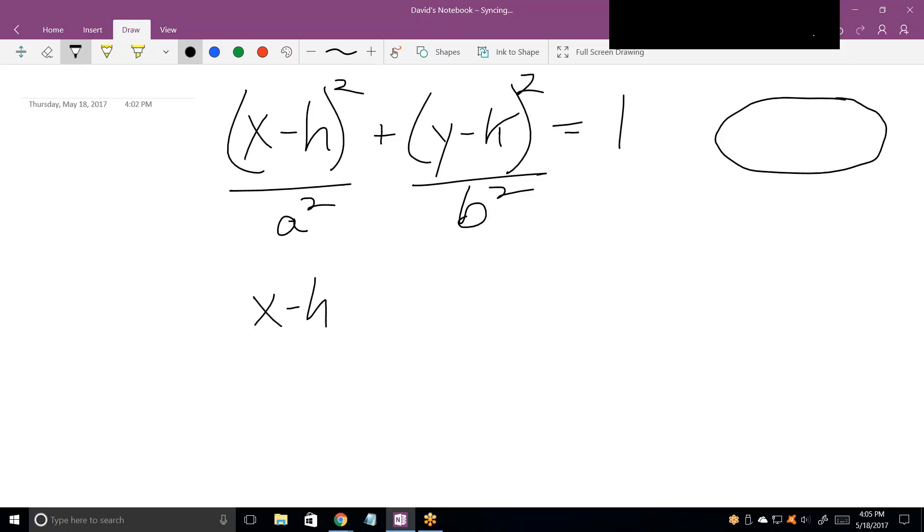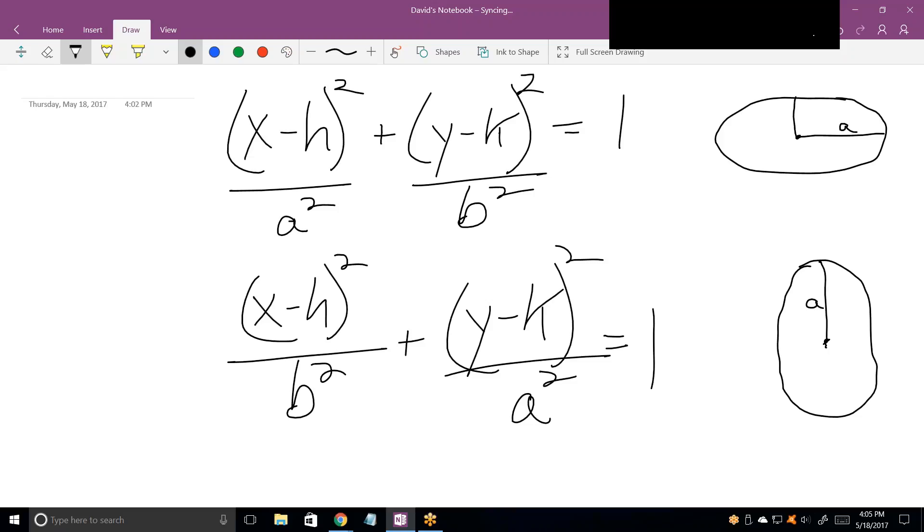If I have a vertical ellipse, then the a squared comes under the y term. It switches. The a is measured, it's kind of like the large radius. In the top ellipse, it's measured horizontally along the x-axis, whereas in the bottom ellipse, it's measured vertically. That's a in the top ellipse. In the top ellipse, that's b. And in the bottom ellipse, that's b.